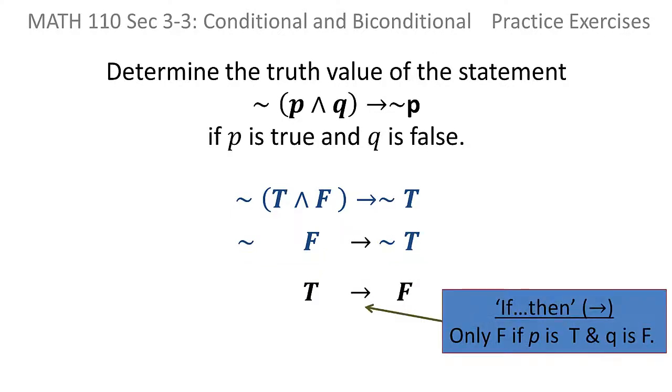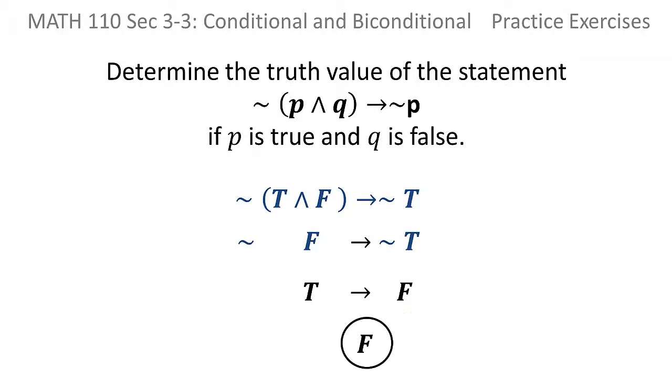We also know that for the if-then, or the implication, it's only false if the hypothesis is true and the conclusion is false. So the if part is true, then part is false. And since that's the case here, we get false. So that original logical statement is false if P is true and Q is false.